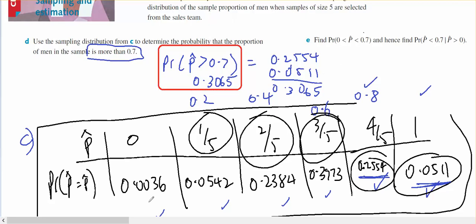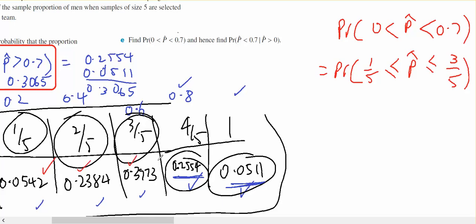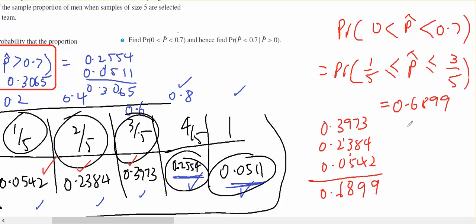Okay, then in part E, find the probability 0 < P hat < 0.7, which equals the probability of P hat being greater than or equal to 1/5 up to less than or equal to 3/5. This one plus this one plus this one: 0.3973 plus 0.2384 plus 0.0542, which gives 0.6899.